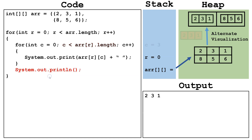We continue to the system out print line, which brings us down to the next line on the console. We get to the end of the outer loop, so we increment r by one — now r equals one. We check is r, which is one, less than arr dot length. Counting the number of rows gives us two, so one is less than two, and we continue. We set c back to zero and check is zero less than the length of the inner array — zero is less than three — so we continue.